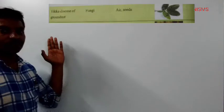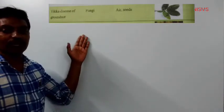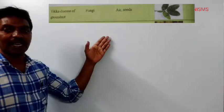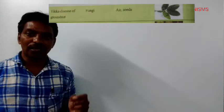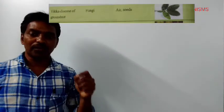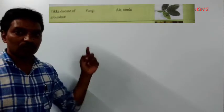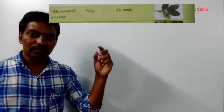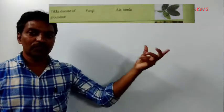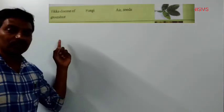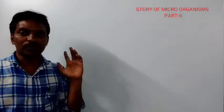The next disease is Tikka Disease of Groundnut. It is caused by fungi. Look at the picture — on the leaves, some black-colored dots are appearing, caused by the fungi. The leaves get spots and also develop some holes. Those symptoms can be identified as Tikka Disease in groundnut. This is the third type of disease.